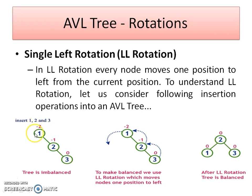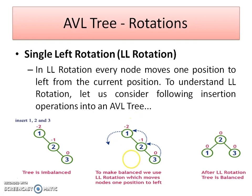To make this tree balanced, we need to perform a single rotation to the left direction. Node 1 will take a position as the left child of node 2, and node 2 will become the new root node. After performing this rotation, you can see that the tree looks balanced, with all nodes having balance factor 0. We can say this is a balanced tree and it is following the rules of a binary search tree. So at the end we can say this is an AVL tree. In LL rotation, every node moves one position to the left from its current position.